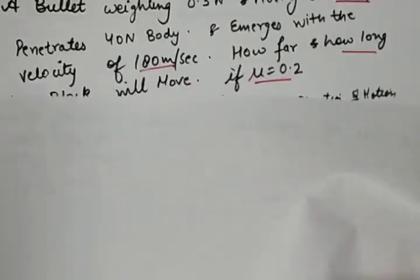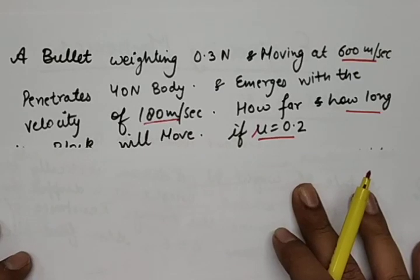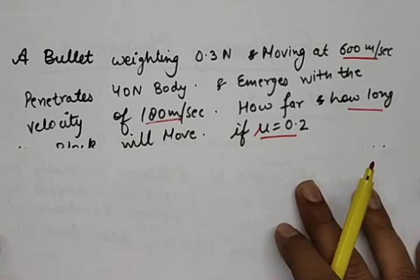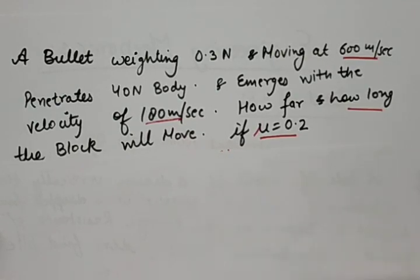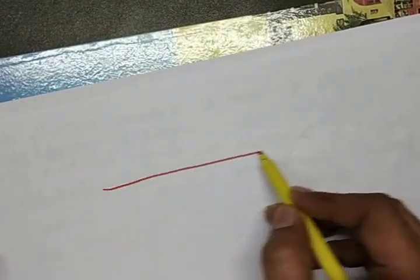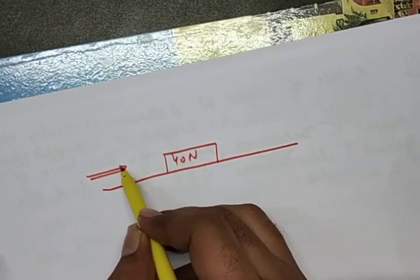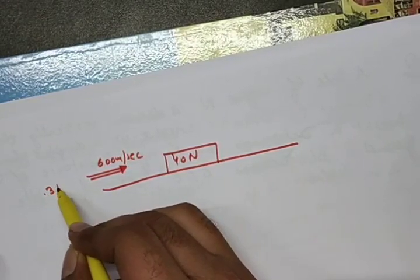This is the first question. A bullet weighing 0.3 Newton and moving at 600 meters per second penetrates a 40 Newton body and emerges with a velocity of 180 meters per second. How far and how long will the block move if the coefficient of friction between the block and the floor is 0.2?